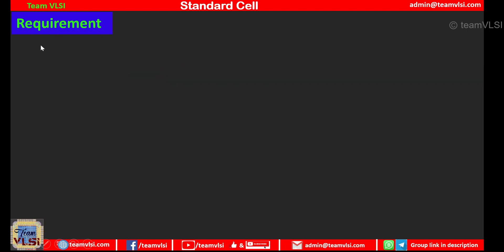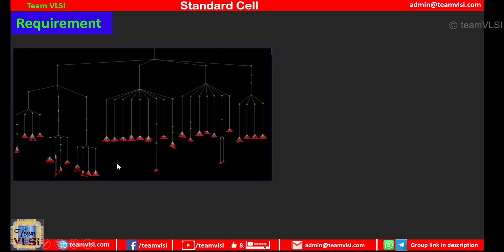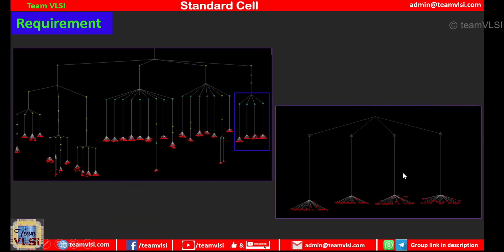Now I would like to talk about the requirement of ICG cells. So here I am presenting a clock tree network, it is a part of clock tree network and if we zoom this area it looks like this. So these red parts are the flip-flops here and it is getting the clock from this clock tree right and these are the integrated clock gating cells.